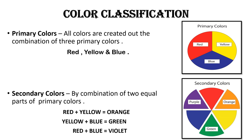Secondary colors are obtained by mixing two primary colors in equal proportion. Red and yellow mixed in equal proportion gives orange. Yellow and blue mixed in equal proportion gives green. Red and blue mixed in equal proportion gives violet.